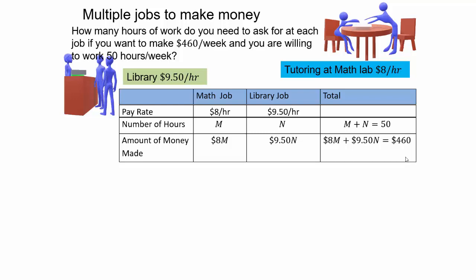The total money you make at each of your jobs should add up to $460. So we have two equations: M plus N equals 50, and 8M plus 9.50N equals 460. Now you have a system of equations. Once you have that, you know what to do. When you read word problems and create a chart and label everything, the equations will pop right out and you'll be able to solve.